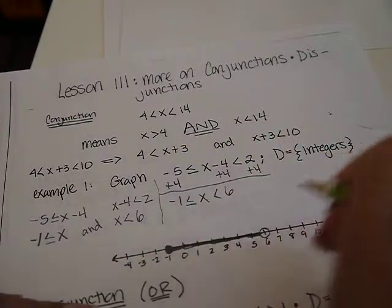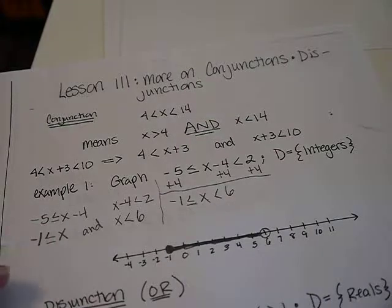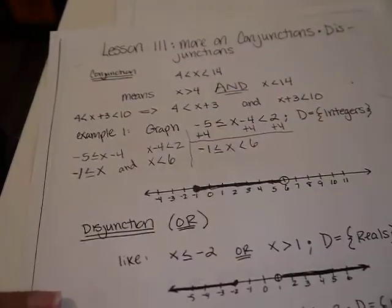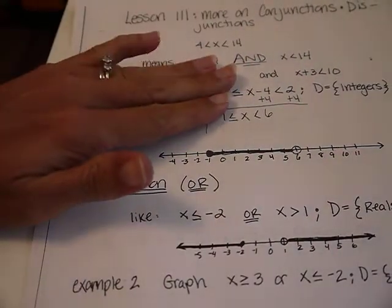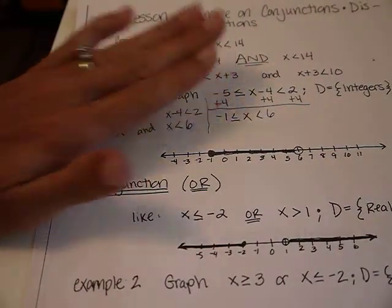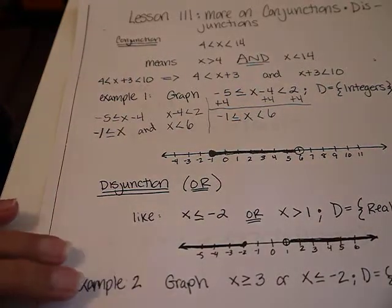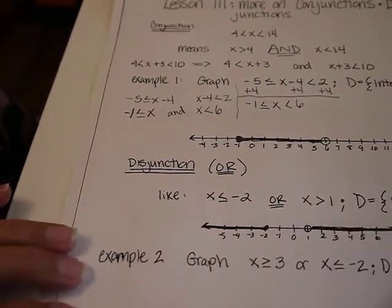It gets a little harder when we do a disjunction. And the word for disjunction is or. Up here it was and. Both conditions had to be true. Down here,